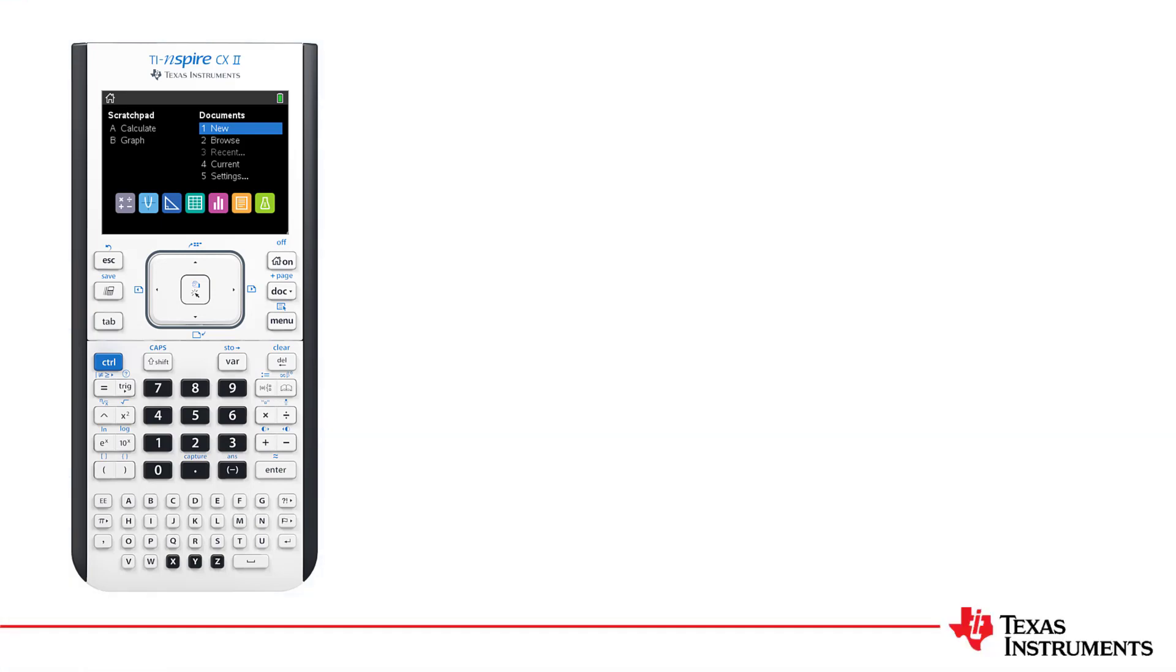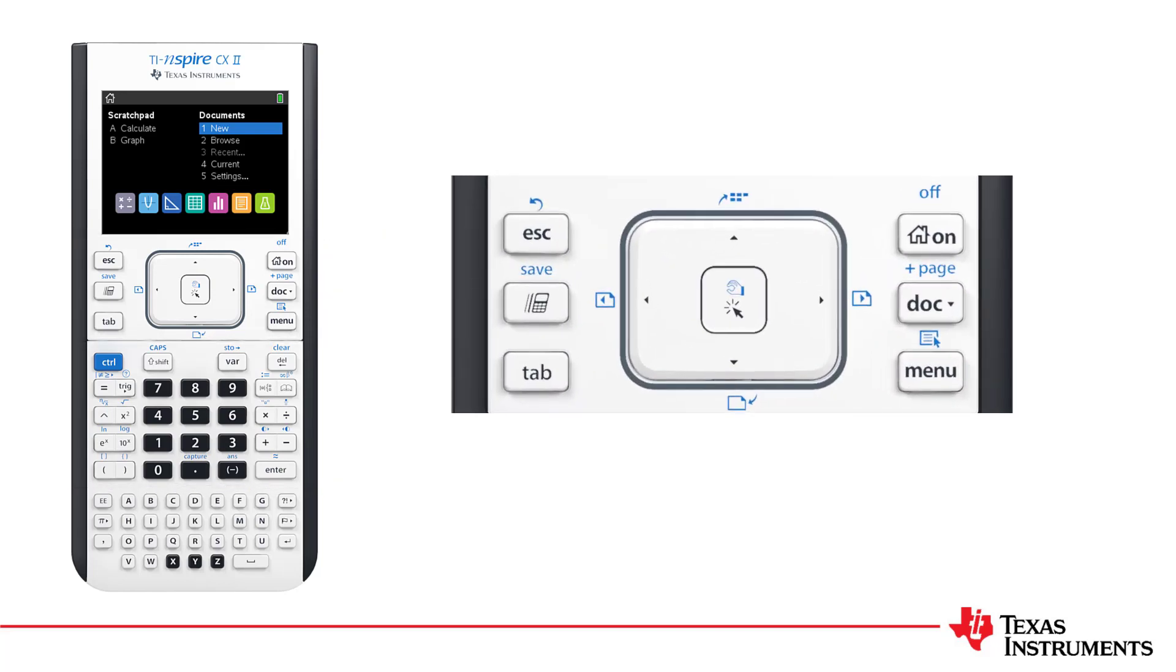Let's start with the layout of the keypad. The keypad is divided into three regions. The top section contains the navigation keys.